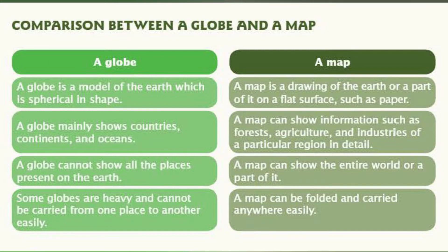A globe is a model of the earth which is spherical in shape. A map is a drawing of the earth or a part of it on a flat surface such as paper. A globe mainly shows countries, continents and oceans. A map can show information such as forest, agriculture and industries of a particular region in detail.